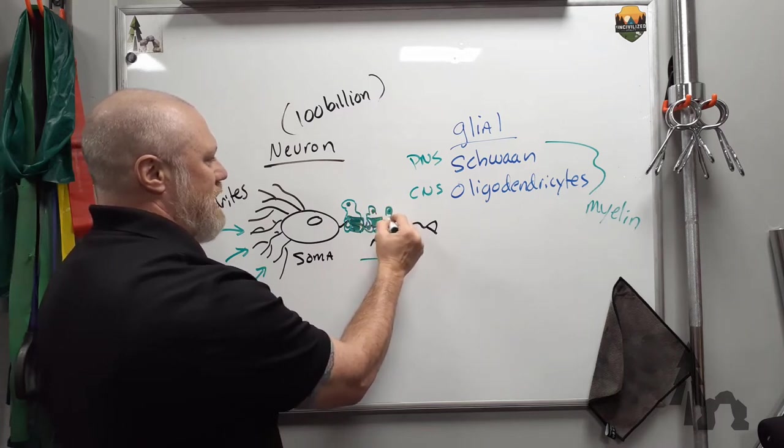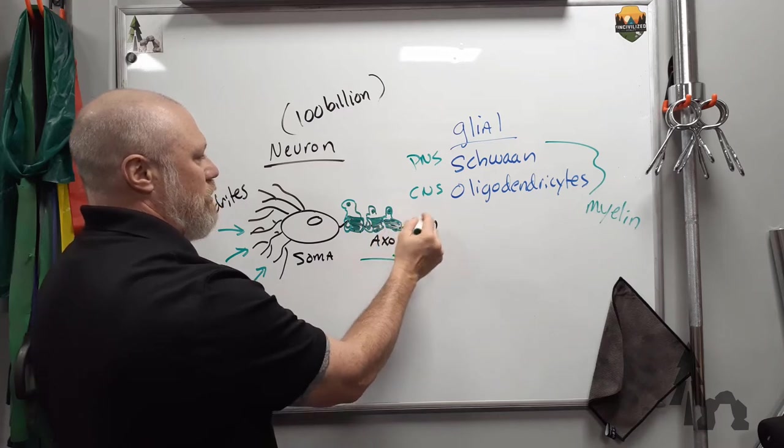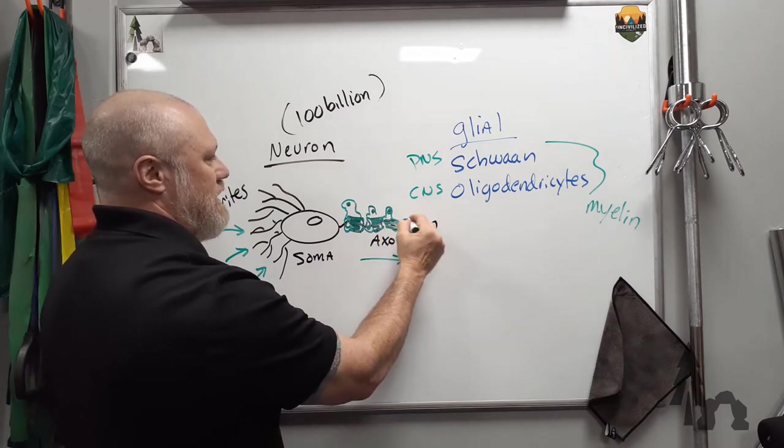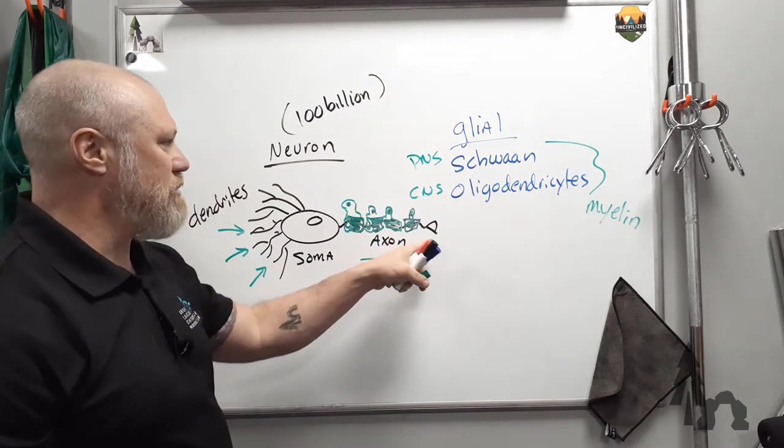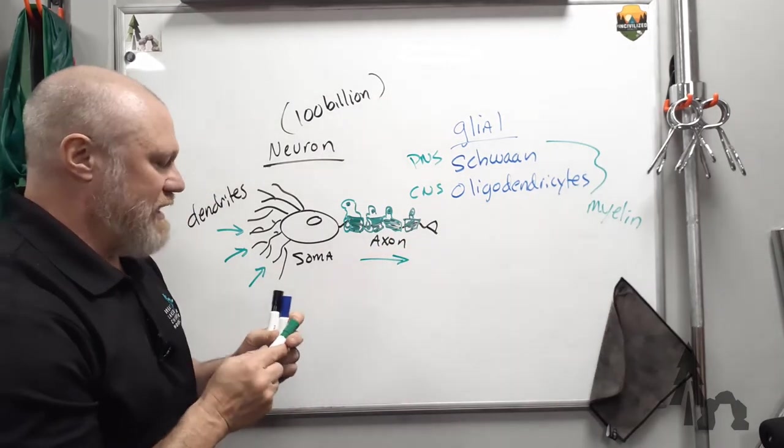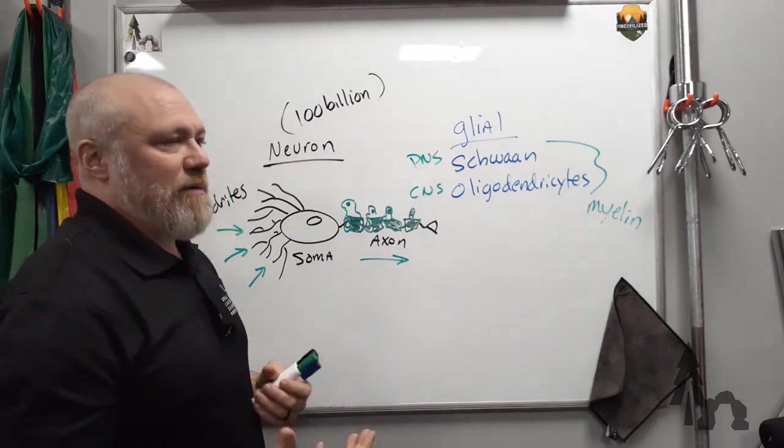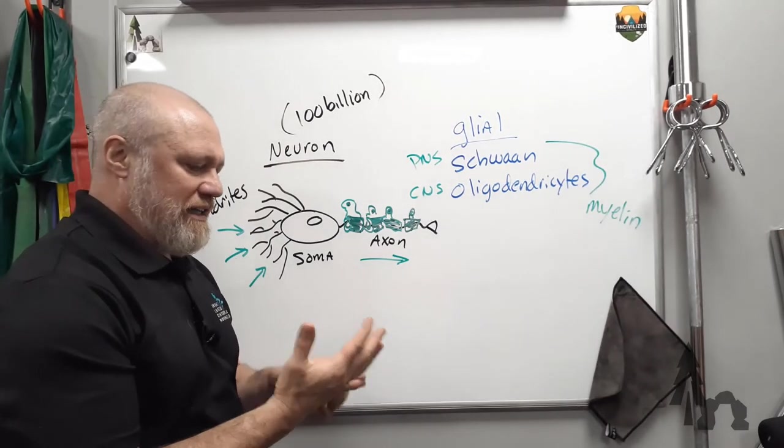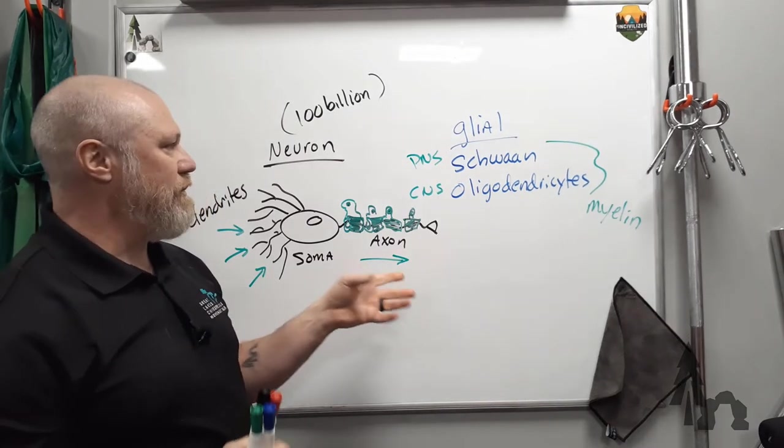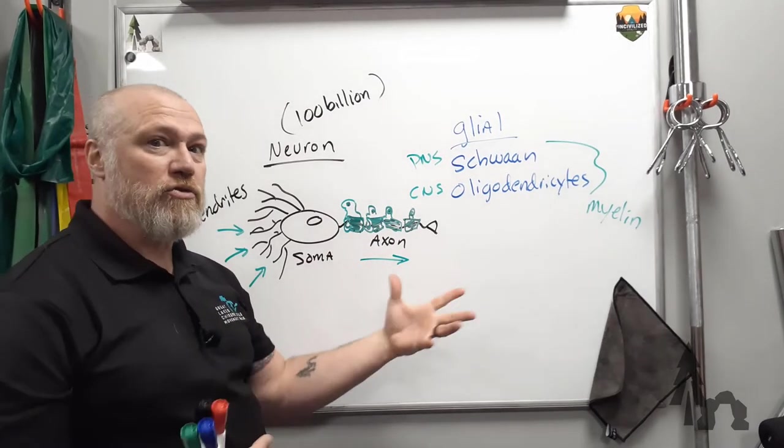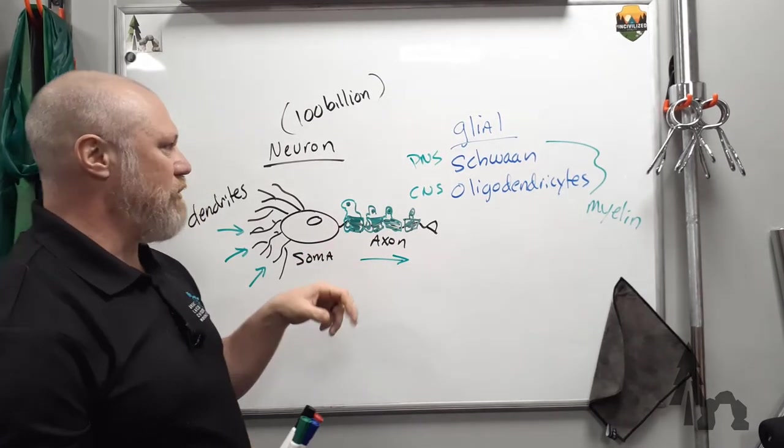And these little Schwann cells will go all the way down the axon as it projects into another part of the central nervous system or out to some sort of effector. Like the autonomic nervous system effectors are glands, cardiac muscle, smooth muscle, and the somatic nervous system effectors, the things that do stuff in your environment, would just be skeletal muscle.